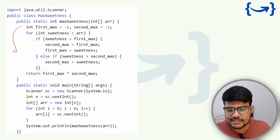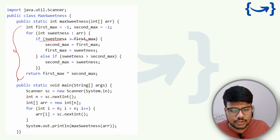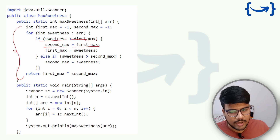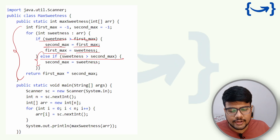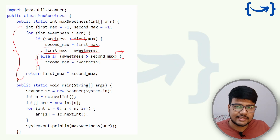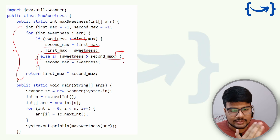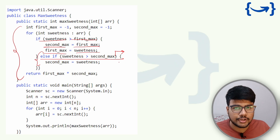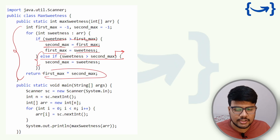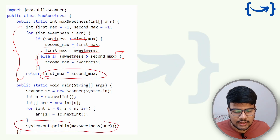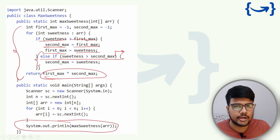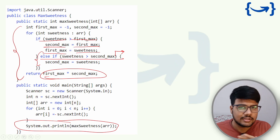For the Java snippet, it's pretty similar to C++. If `sweetness > firstMax`, set `secondMax = firstMax` and `firstMax = sweetness`. To handle duplicates, add else-if `sweetness > secondMax` then `secondMax = sweetness`. If you don't want to allow duplicates, add the condition that the current sweetness should be strictly less than `firstMax`. Finally, print `firstMax * secondMax` and you're done.